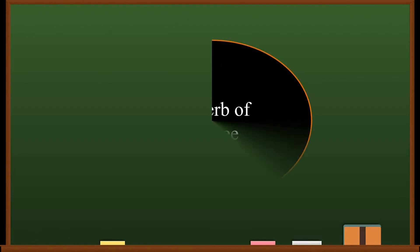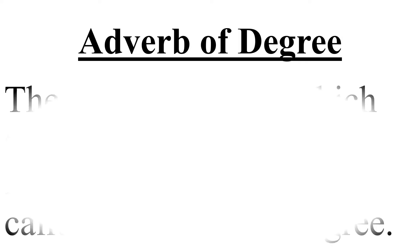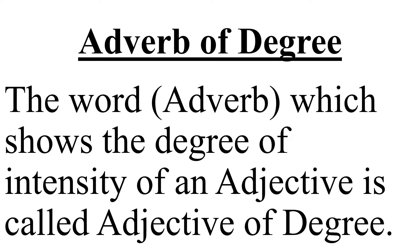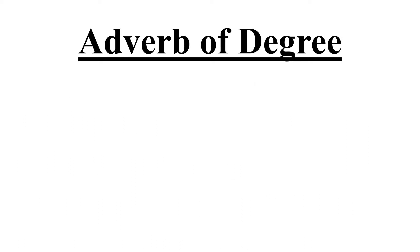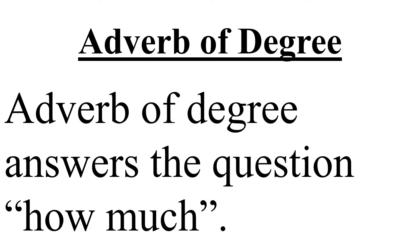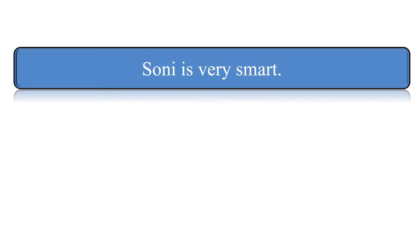The second is Adverb of Degree. The word or Adverb which shows the degree of intensity of an adjective is called Adverb of Degree. Aisay word jo kisi bhi Adjective ki intensity batate hain, unhain hum kehte hain Adverb of Degree. Adverb of Degree mein kabhi bhi accurate measurement ka pata nahin chal sakta. It answers the question 'how much'. For example: Soni is very smart. How much smart is Soni? Very.